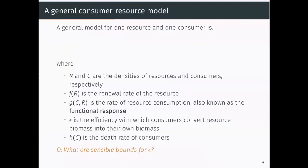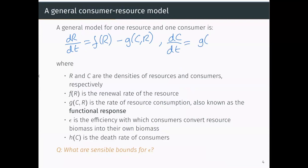So we can write down some equations that correspond to this. Let's think about an equation for our resource, dr/dt. We want to have a renewal — that's going to be some function of our resource. We want to have consumption; I'll call this G, which is a function of the density of our consumer and our resource. And then for our consumer, we're going to have consumption again, G of C and R, but we're going to assume that there's going to be an efficiency parameter as well. And that tells us how well those resources are converted into biomass for our consumer. And then we have a death rate, which I call H of C. This G of C and R we're going to be focusing on quite a bit, and this is essentially the rate of resource consumption.